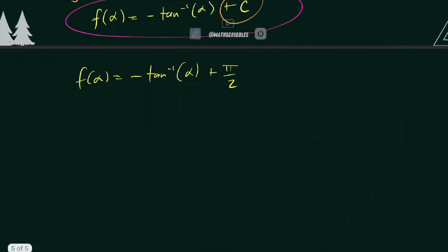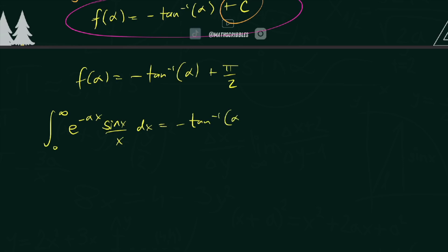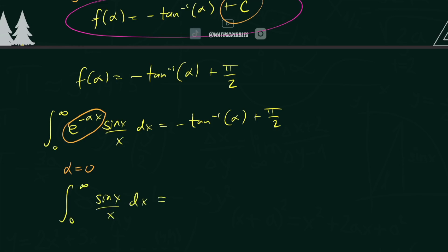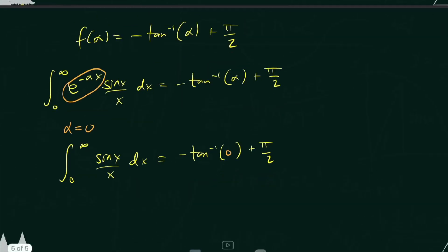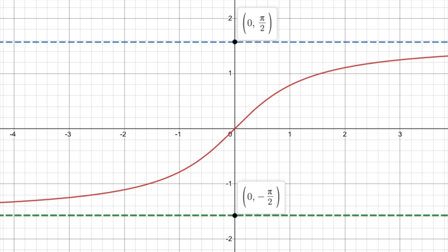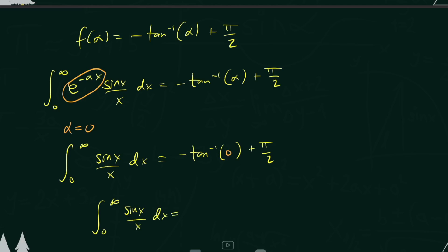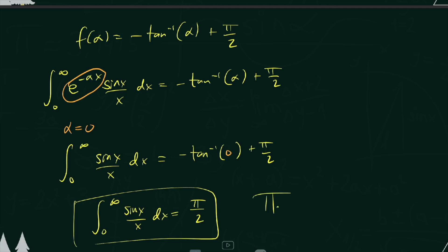We're almost done. F(α) equals the integral from zero to infinity of e^(−αx) sin(x)/x dx, and it equals negative arctan(α) + π/2. Our original integral didn't have that e^(−αx) term, so we set α = 0: e^0 = 1, giving us the original integral. With α = 0, we have negative arctan(0) + π/2. Since arctan(0) = 0, the result is π/2. So the integral from zero to infinity of sin(x)/x dx equals π/2, solved using the Feynman technique. I'll have a PDF of all the work in the description below.